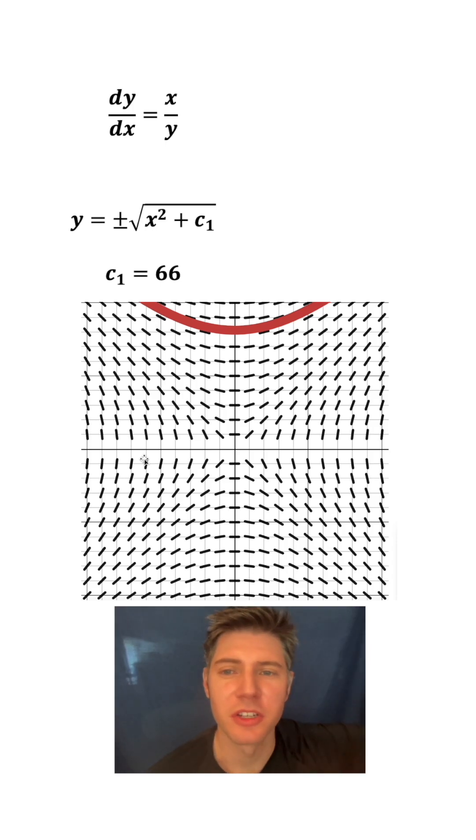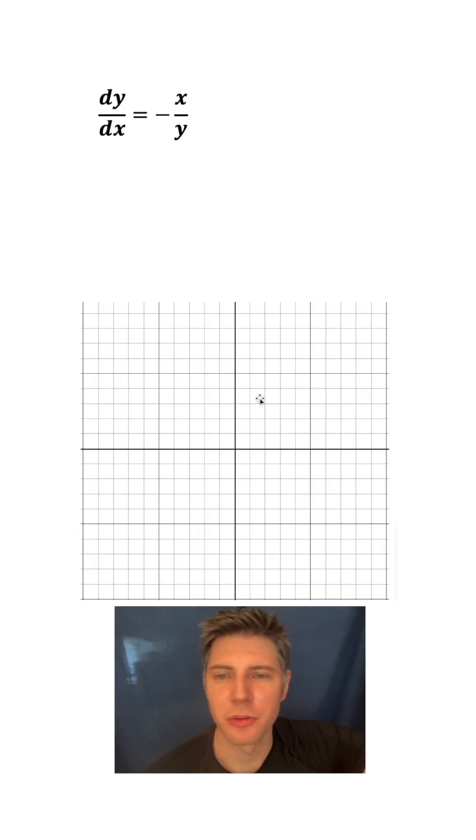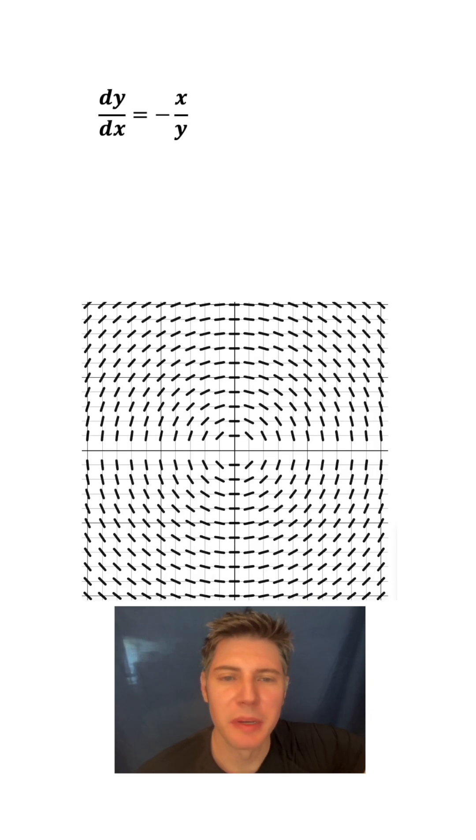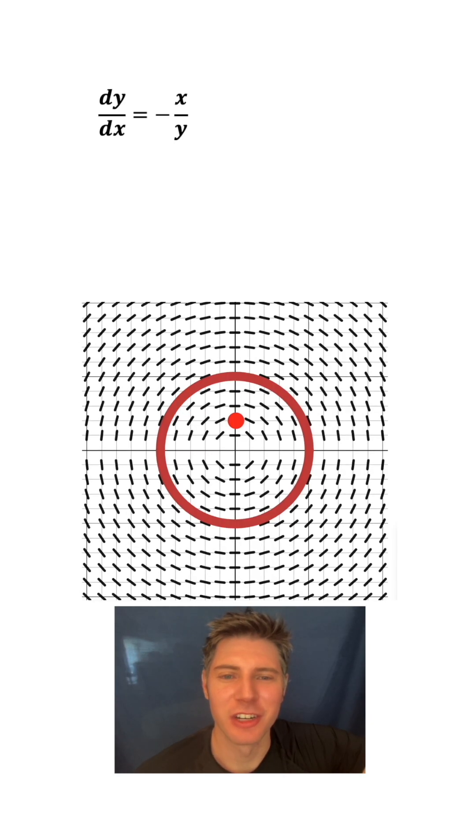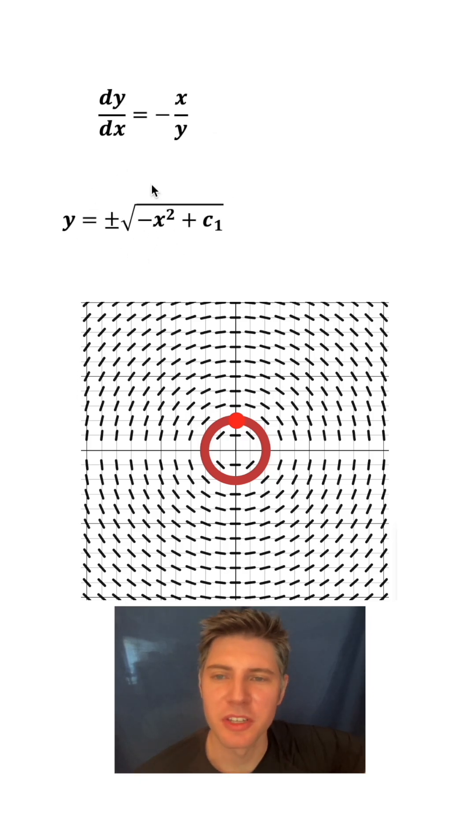This is one of my favorite differential equations: -x over y. Because when you pick a point on this, it makes a circle, or you can pick another point and it also makes a circle. And this is the solution set to this differential equation. Are you curious how we actually calculate these?